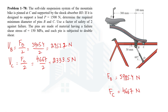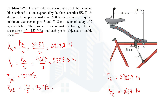The failure shear stress of the material is 150 MPa. Since a factor of safety of 2 is applied, the allowable shear stress is 150 / 2 = 75 MPa. This is the allowable shear stress for the pins. Using the shear stress formula — shear force divided by shear area — we can now determine the diameters.